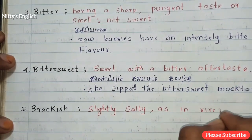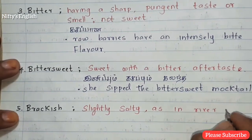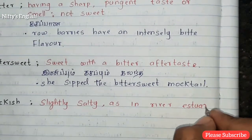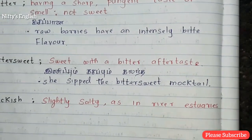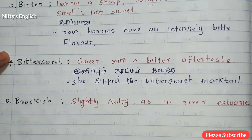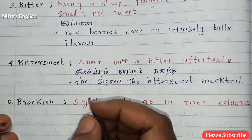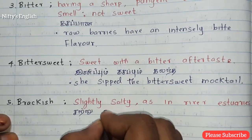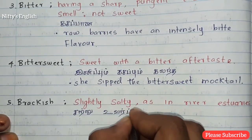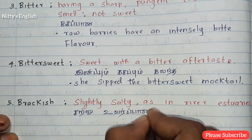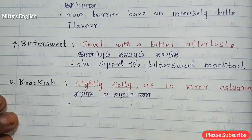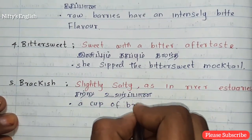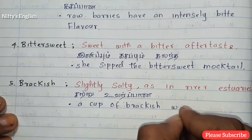Brackish means slightly salty, as in estuaries and salt rivers. In Tamil, brackish means sat river pan. For example: a cup of brackish water.